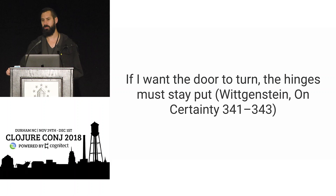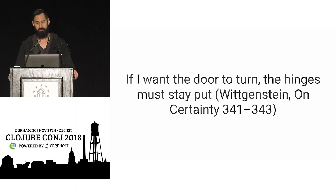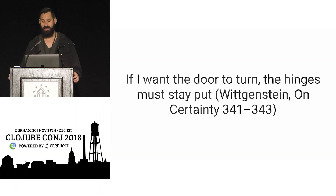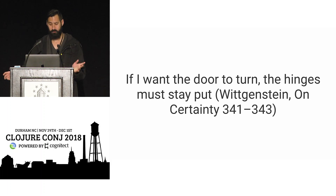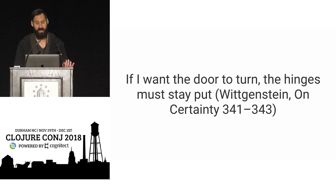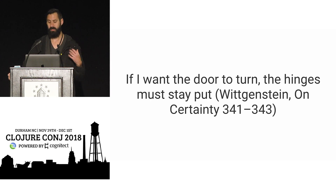There's something even more fundamental here, coming back to Wittgenstein. In 'On Certainty' he analyzes G.E. Moore's argument: 'here is one hand, here is another, therefore there are two objects in the external world, therefore there is an external world' — intended as a refutation of radical skepticism. Wittgenstein's response was: 'if I want the door to turn, the hinges must stay put.' Knowledge has to be built on something — you can't see the world without also having a way of seeing the world.